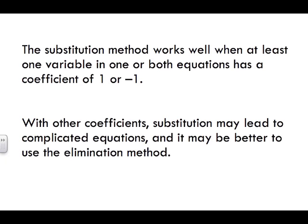The substitution method works well when at least one variable in both equations has a coefficient of one or negative one. For example, if we have something like x plus 2y equals 7, we are not going to try to isolate for y because there is a number in front of y. We are going to want to isolate for x — a variable that is by itself with no number in front of it. That is what we would try to substitute. But sometimes you might be asked to solve by elimination. If you've got a variable that is by itself like x, substitution is your best method.